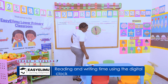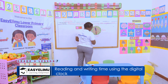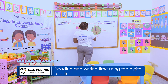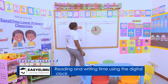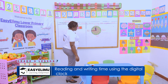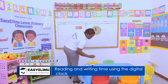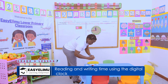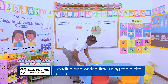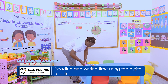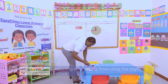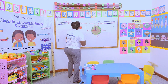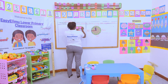What if the clock face shows quarter to twelve? Quarter to twelve means fifteen minutes to twelve, and fifteen minutes is represented by forty-five.